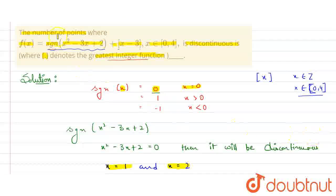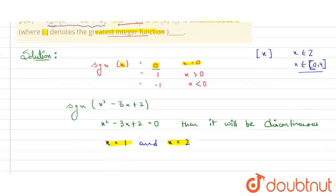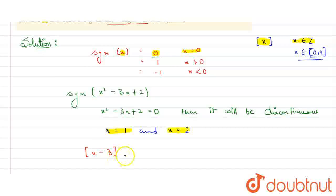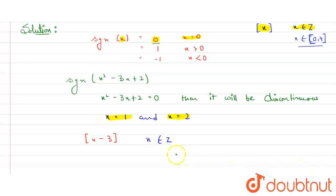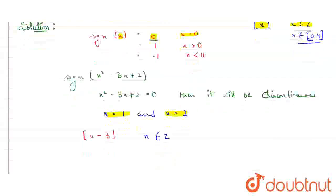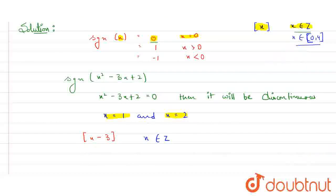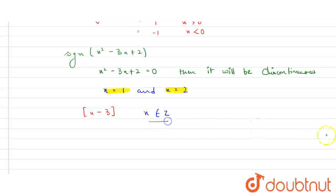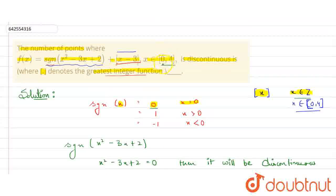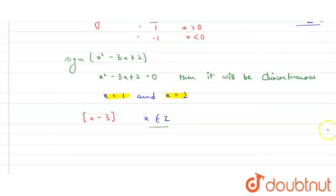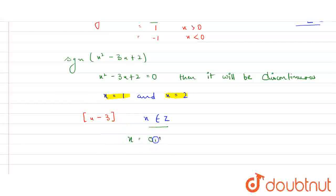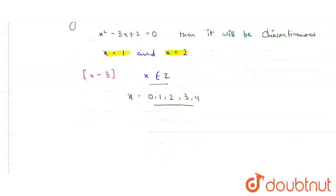Now we check the discontinuity of the greatest integer function part, which is [x - 3]. This function is discontinuous at all x belonging to the set of integers. Since x belongs to [0, 4], all integers in this range are 0, 1, 2, 3, and 4. So [x - 3] will be discontinuous at these 5 integer points.